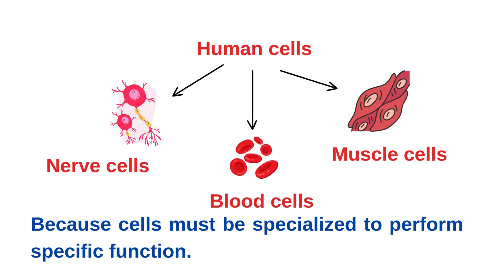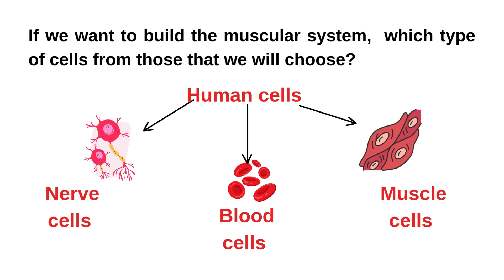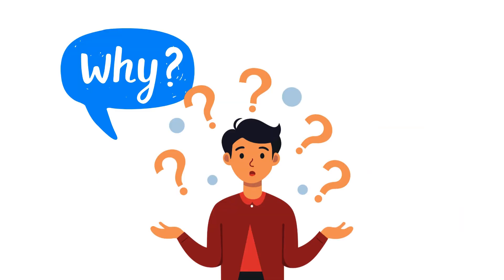We know that human cells have different sizes and different shapes. The nerve cell has a shape and size different from blood cells, and we have the muscle cells. Why do they have different shapes and sizes? Because cells must be specialized to perform a specific function. So if we want to build the muscular system, which type of cells would we pick? Do we choose nerve cells, blood cells, or muscle cells? Yes, we pick up the muscle cells to build the muscular system, because these cells are specialized and can perform the function of the muscular system.